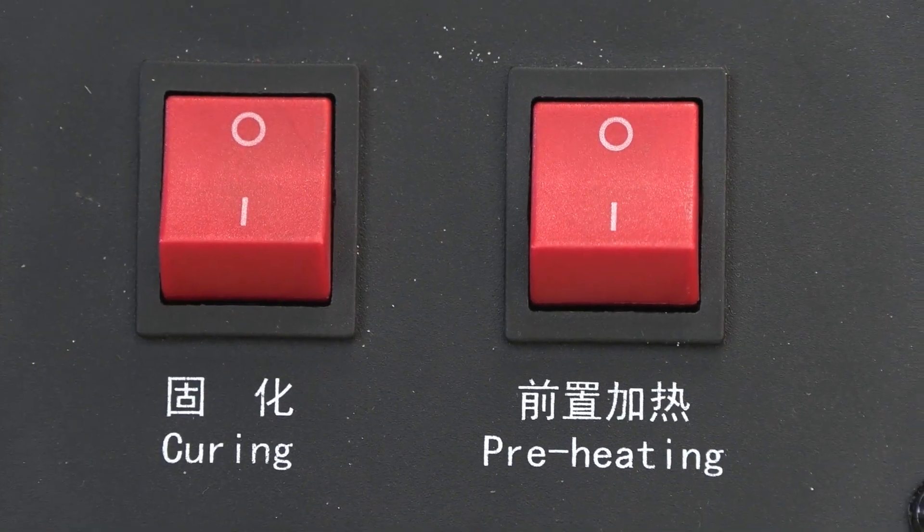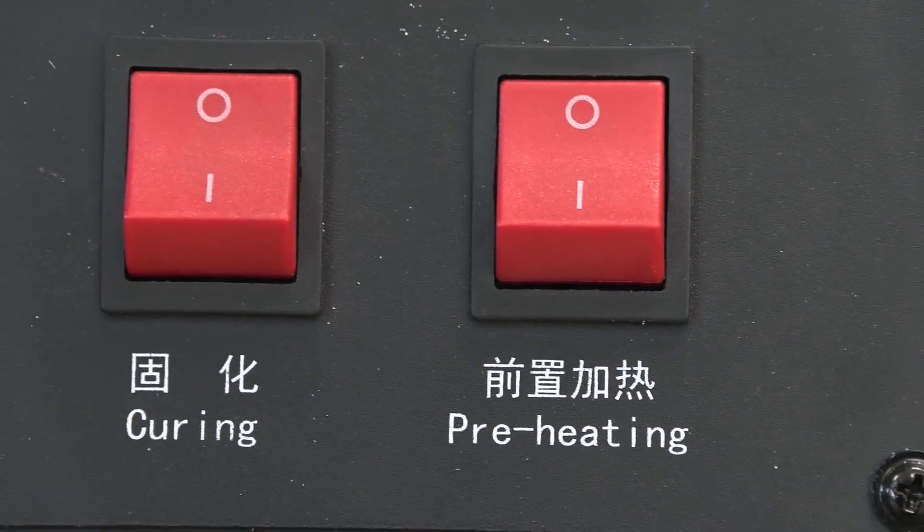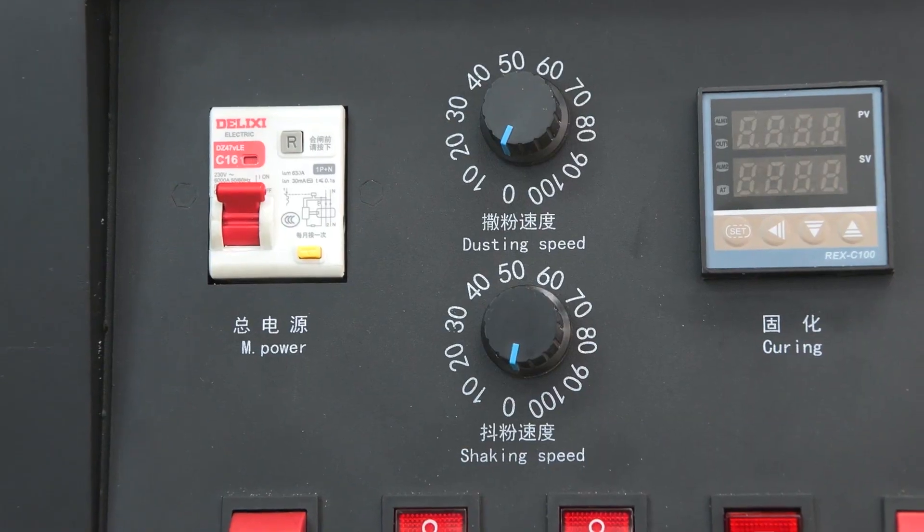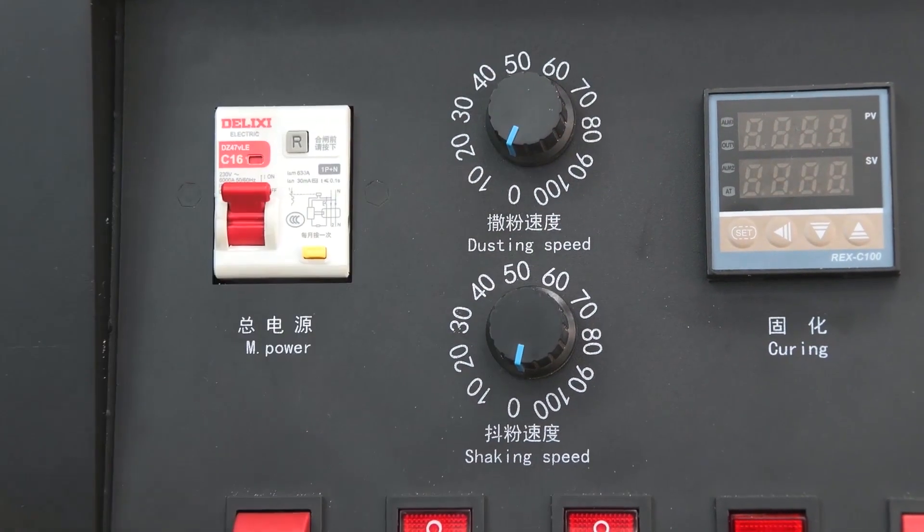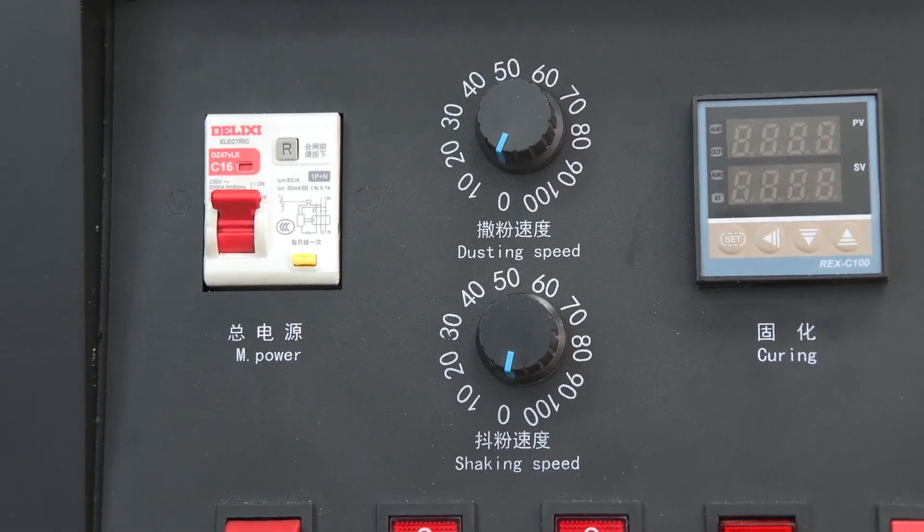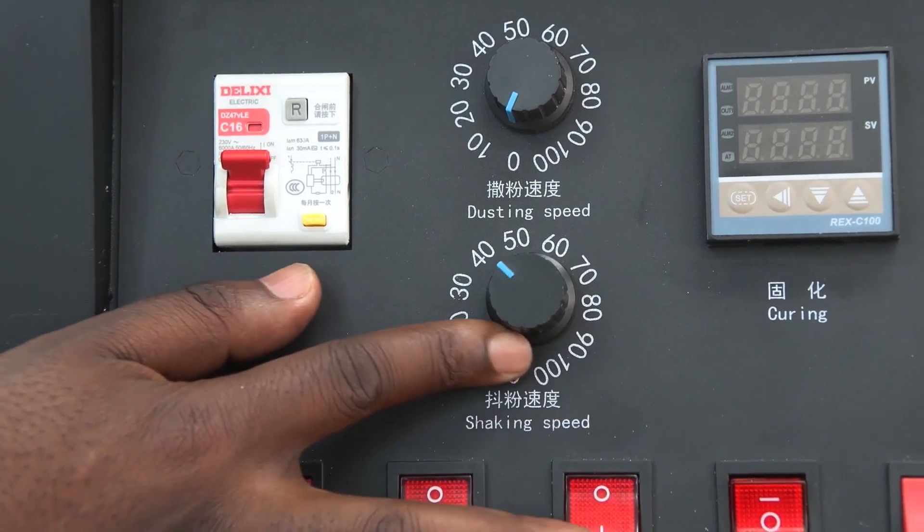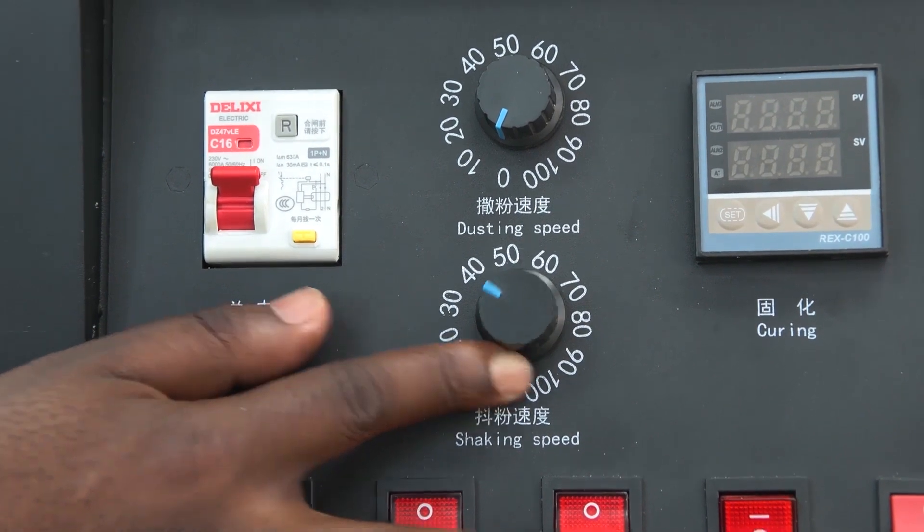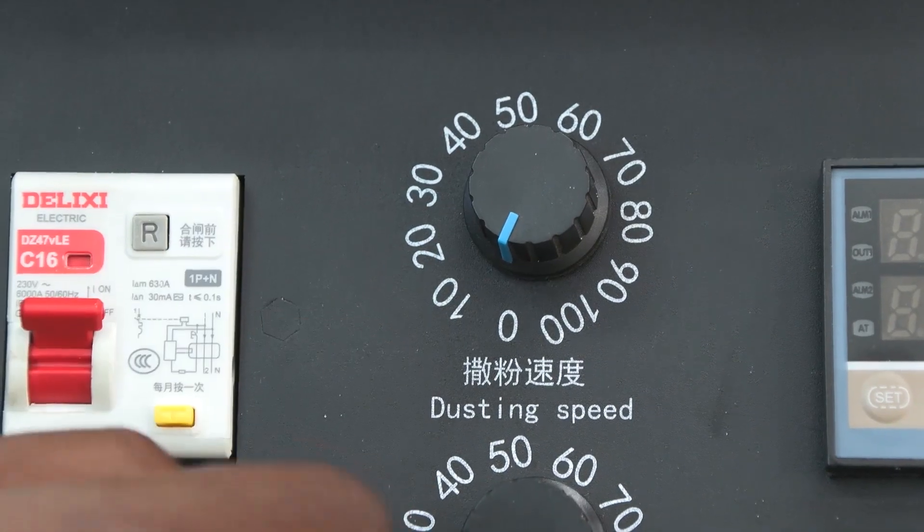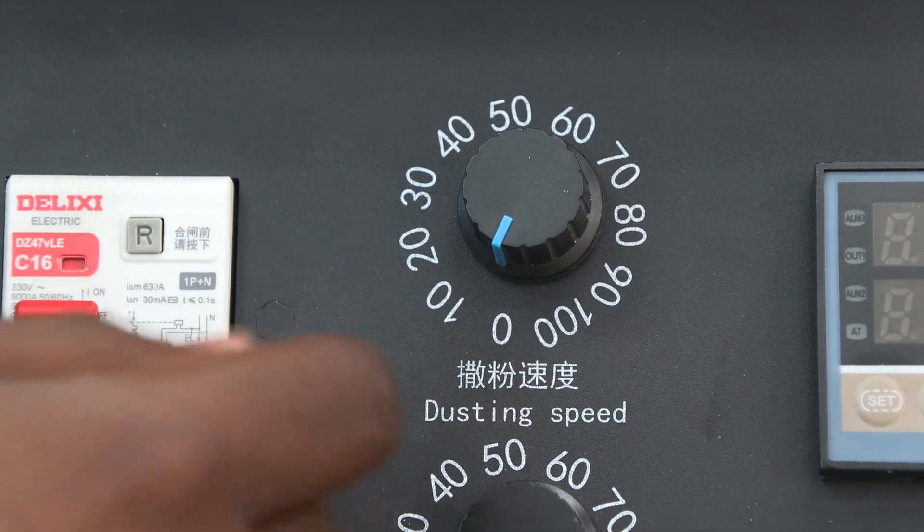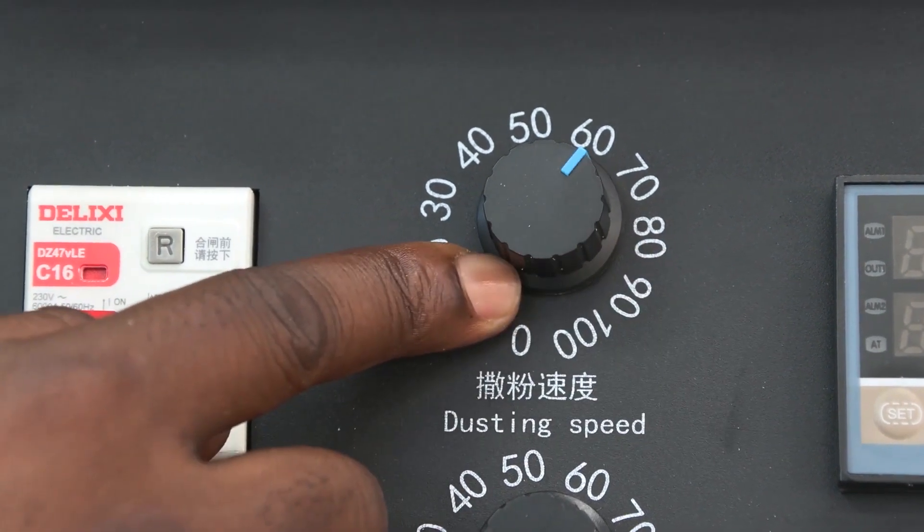Then the next button is the curing, this is the on and off switch for your oven. And the next up we have these two dials here, first one being the shaking speed which regulates how much speed your shaking is moving at. The next one we have the dusting speed which also regulates how much speed the duster moves at.